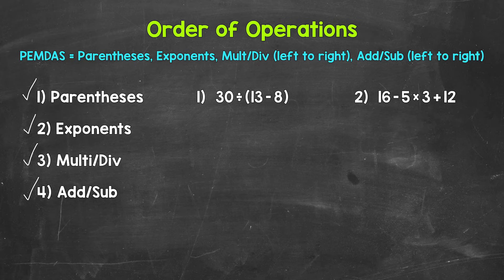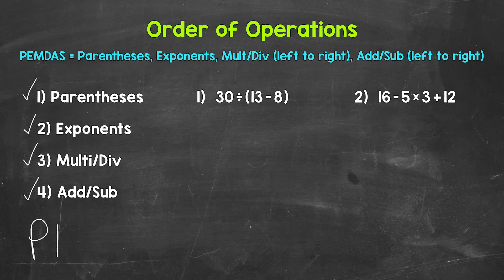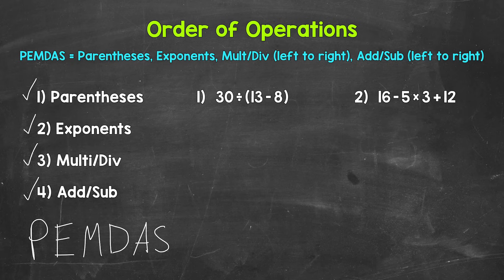And then addition and subtraction. Addition and subtraction are on the same level — they are the same priority. So if we have both, we work from left to right. This will all make a lot more sense as we go through our examples. Just think of the order of operations like a set of instructions that we follow step-by-step. We have an acronym to remember that order: PEMDAS — parentheses, exponents, multiplication and division, and then addition and subtraction. Let's jump into our examples and see exactly how all of this works.